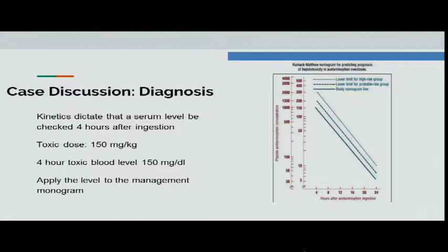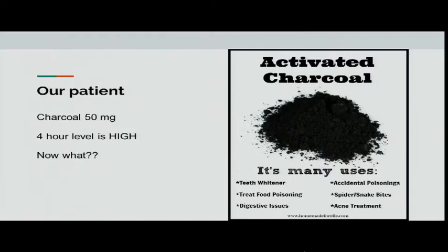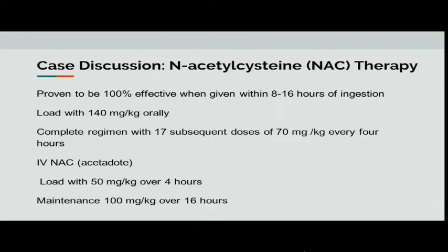Serum levels should be checked every four hours. The toxic dose is 150 mg/kg, and the four-hour toxic level is 150 mg/dL. A nomogram guides management, showing lower limits for high-risk and probable-risk groups and a safe zone. This patient was given charcoal but the four-hour level was still high. Treatment is N-acetylcysteine therapy, proven 100% effective when given within 8 to 16 hours of ingestion. Oral loading is 140 mg/kg, then 17 subsequent doses of 70 mg/kg every four hours. IV form: load 50 mg/kg over four hours, then maintenance 100 mg/kg over 16 hours.